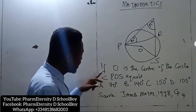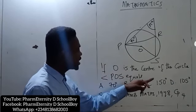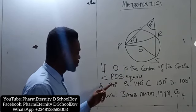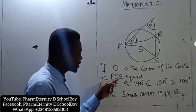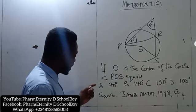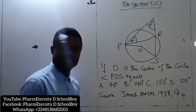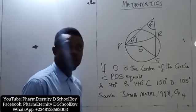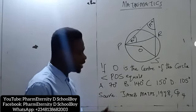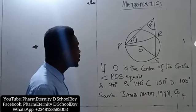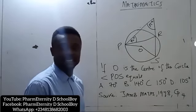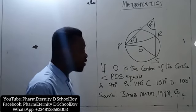the question says, If O is the center of the circle, angle POS equals A, 70 degrees, B, 140 degrees, C, 150 degrees, D, 105 degrees. The question source is Jam Mathematics 1978, question 4.